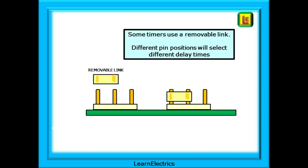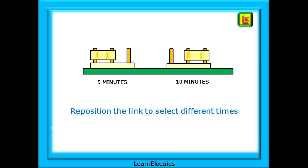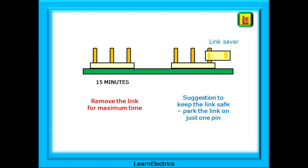Timers with removable links use different pin positions to select different delay times, and we will use this type to demonstrate the timing principle. We just reposition the link to select a different time. As shown, we can choose an overrun of 5 minutes or 10 minutes with these positions, and removing the link altogether will give a 15-minute delay. If this was the case on site, I would put the link onto just one pin so that the link is saved for future use — from experience, if it's not kept in the fan it will nearly always be lost when you need it.